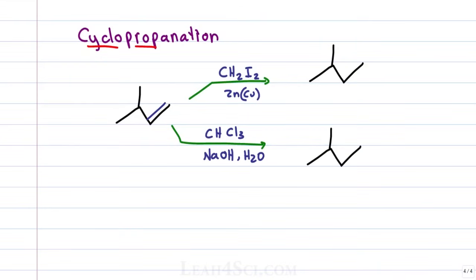The skeleton of the product is the same. So when you see this reaction, cut off your pi bond and create a ring just like we did with epoxidation but this time we're using a carbon instead of oxygen to create that three membered ring.